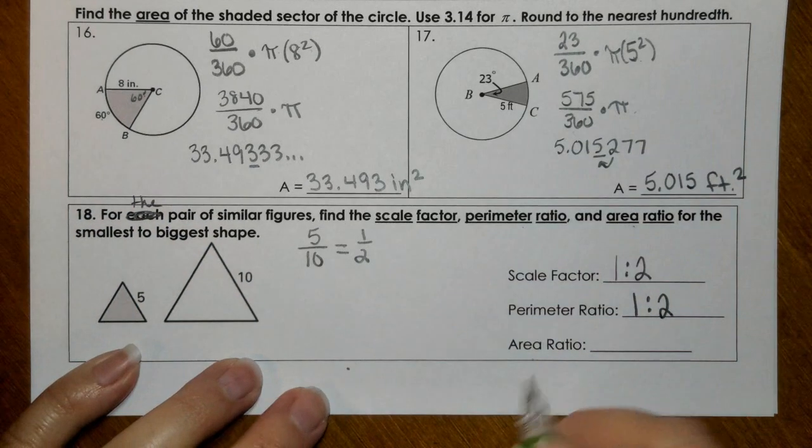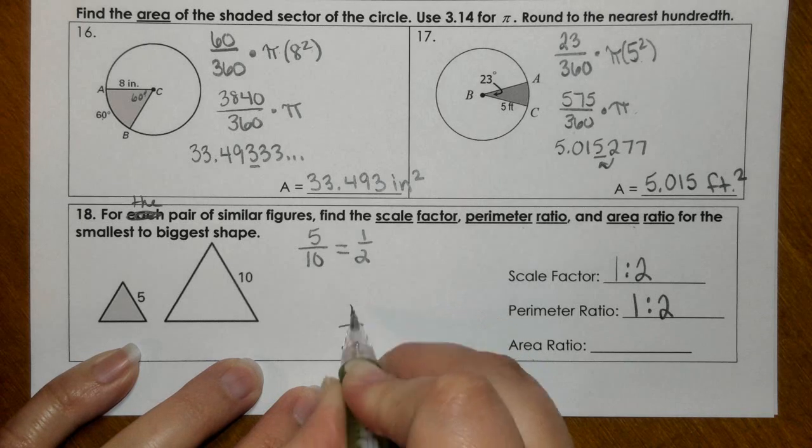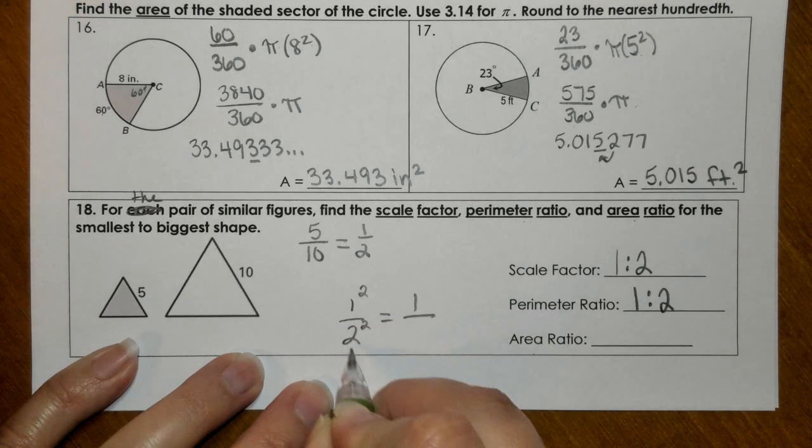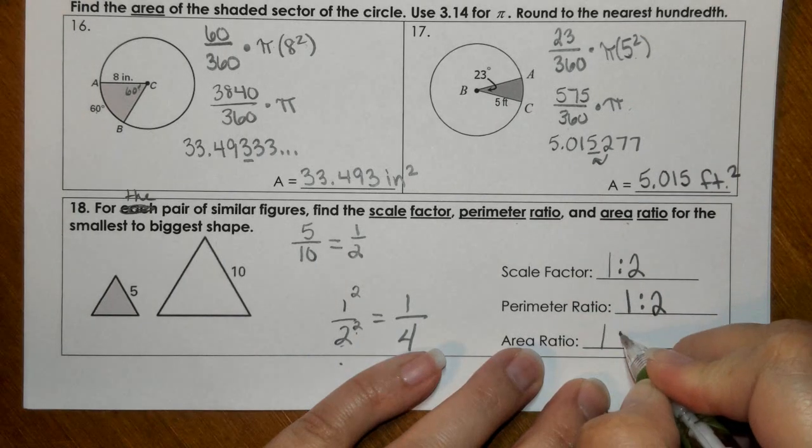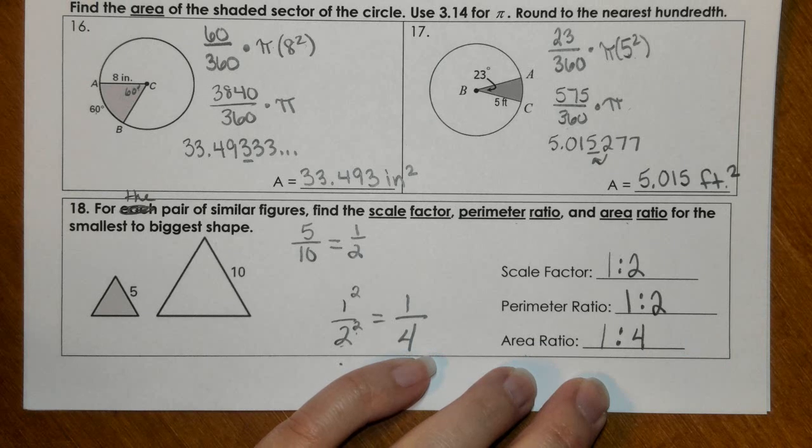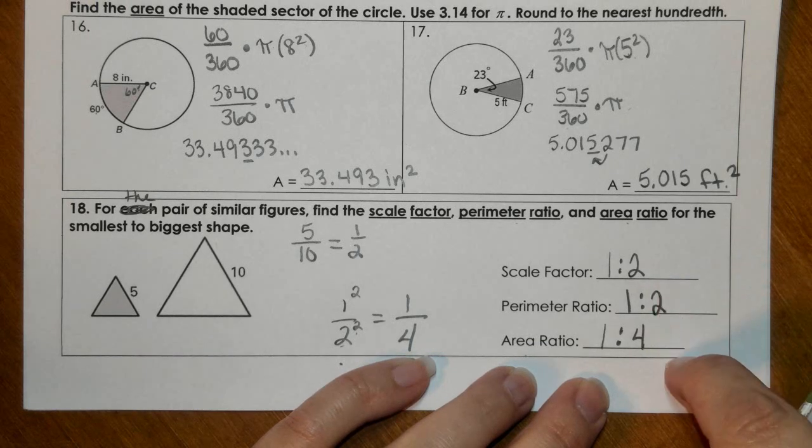In these notes, you were told the scale factor and the perimeter ratio are the exact same thing. So, the perimeter ratio is also 1 to 2. But your area ratio is when you take your scale factor and you square it. So 1 squared is 1, and 2 squared is 4. So there are your 3 ratios. I believe this would be multiple response, so you would select 3 answers here for 3 points.